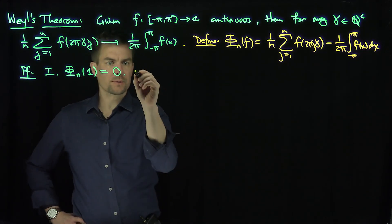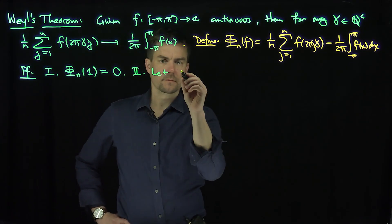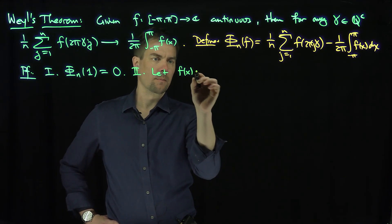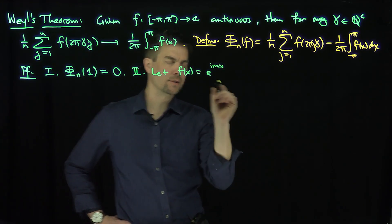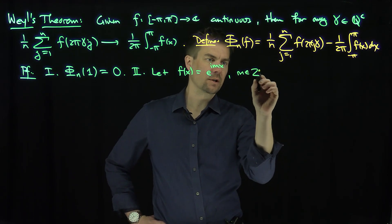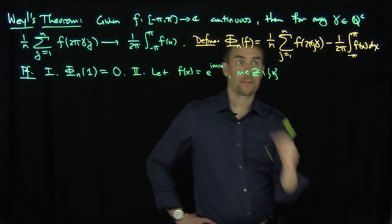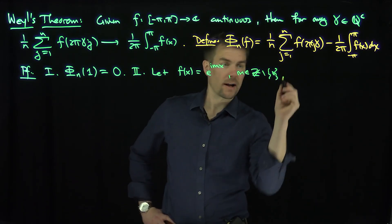Now, part 2 is, let f of x be e to the imx, where m is a non-zero integer. Then let's plug in e to the imx into φ.